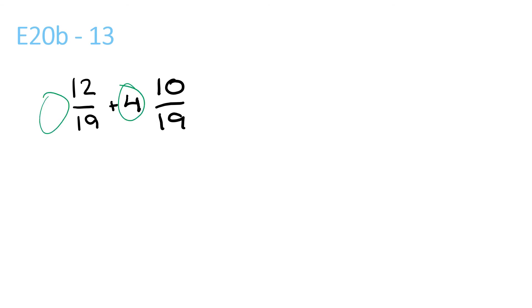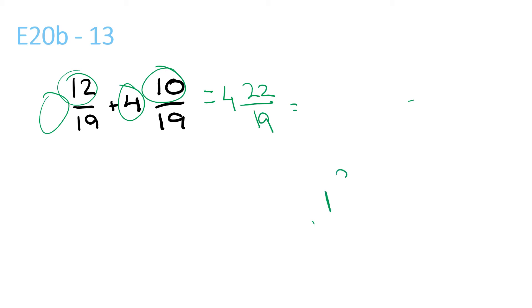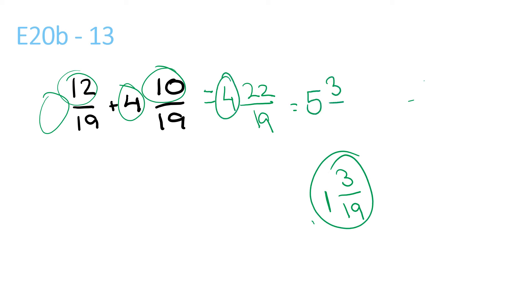4 plus nothing is 4. 12 plus 10 is 22 over 19. 19 goes into 22 once with a remainder of 3 over 19. So 1 and 3 over 19 plus 4 is equal to 5 and 3 over 19.